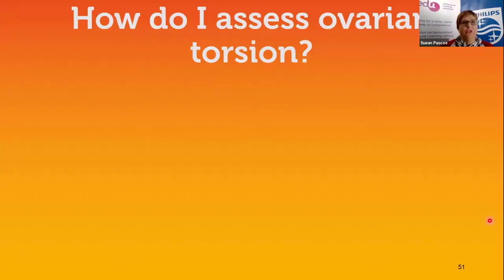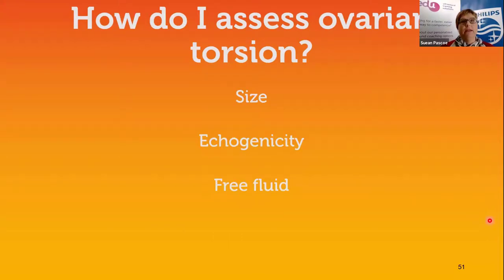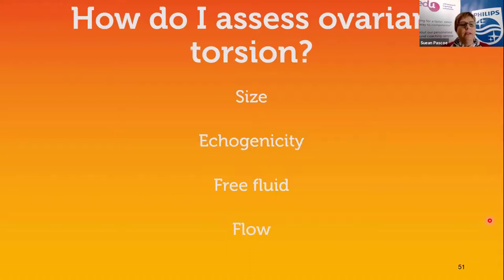To summarize how to assess for ovarian torsion: compare both ovaries and look for a size discrepancy — torted ovaries tend to be bigger than 4 centimeters. Look at the echogenicity of both — the torted ovary can be brighter or quite hypoechoic depending on when you catch it. Check for free fluid. Note that these are all B-mode signs. Look at as many images as you can to pattern-recognize what a torted ovary looks like, rather than relying on color flow. If the first time you use color flow is on a torted ovary case, you can't be confident whether the absent signal is true or just poor settings.